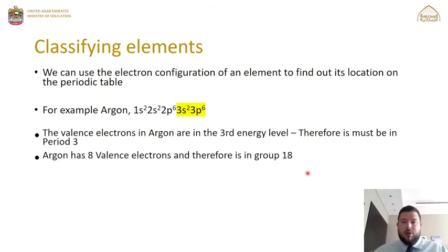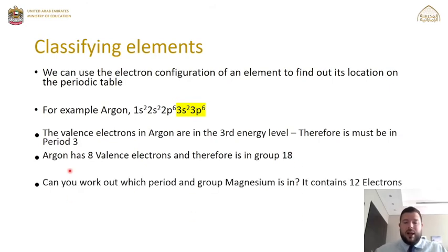Here's a question for you: Can you work out which period and group magnesium is in? It contains 12 electrons. You'll need to write the electron configuration and then determine the period and group. Pause the video to work it out, and I'll discuss the answer shortly.